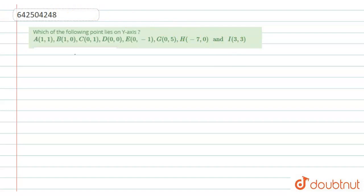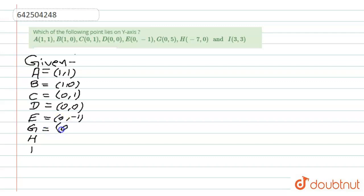So the data with which we are given is: points A, B, C, D, E, G, H, and I. A has coordinates (1,1), B has (1,0), C has (0,1), D has (0,0), E has (0,-1), G has (0,5), H has (-7,0), and I has (3,3).